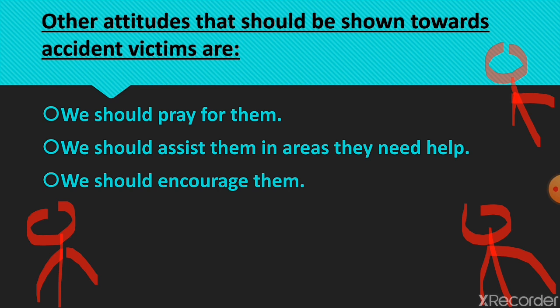Please note there are attitudes that should NOT be shown towards accident victims. One, you don't steal from an accident victim. Two, you don't just stand taking pictures and videos of an accident victim when you should be helping. Three, you don't neglect an accident victim — if you see one and you are too young to help, get an adult to do so. I believe as from today, we've learned the attitudes we should show towards accident victims, and I know we are going to start showing those attitudes.